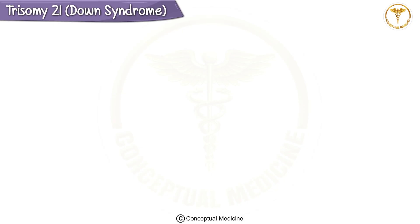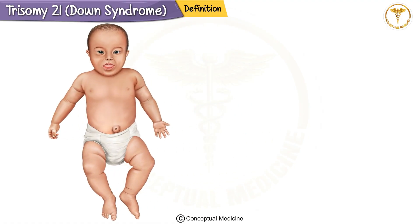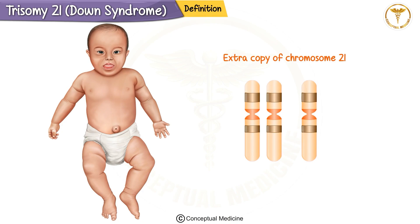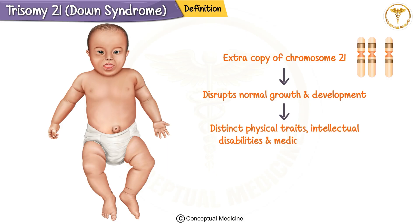Trisomy 21, Down Syndrome. In this video, we will learn about trisomy 21, which is commonly known as Down syndrome. It is a genetic condition caused by an extra copy of chromosome 21. This additional genetic material disrupts normal growth and development, leading to distinct physical traits, intellectual disability, and certain medical challenges.